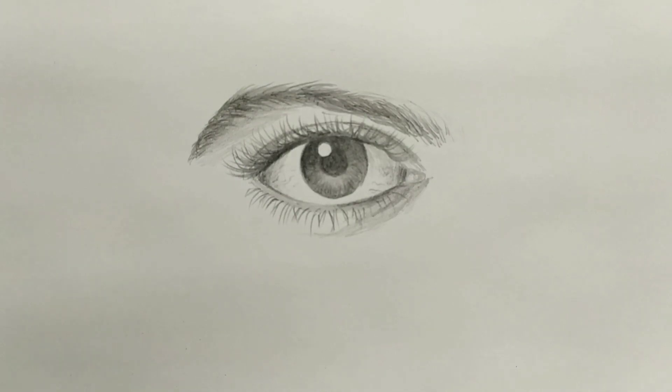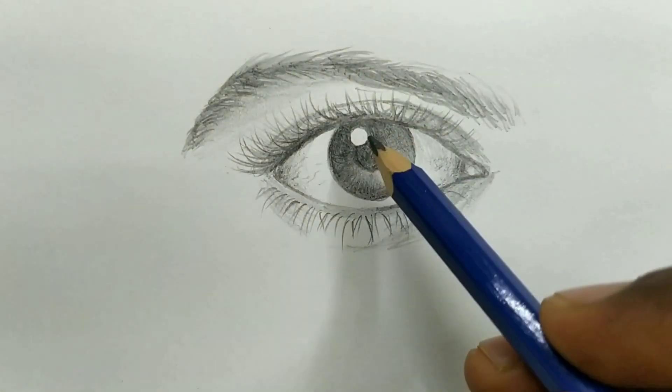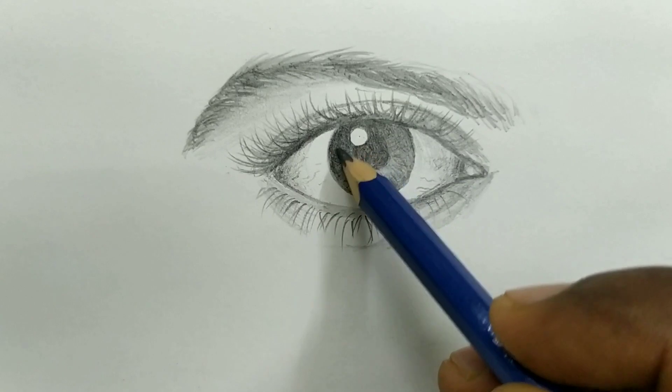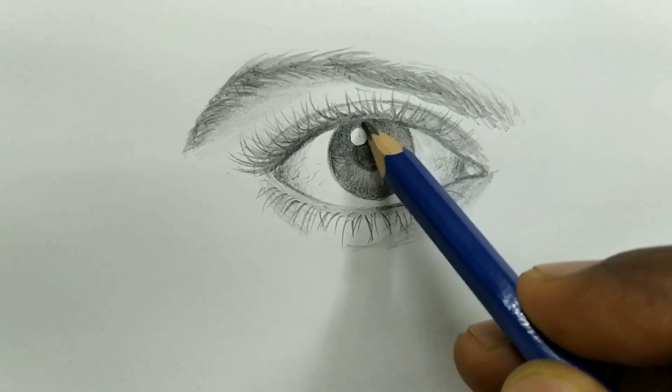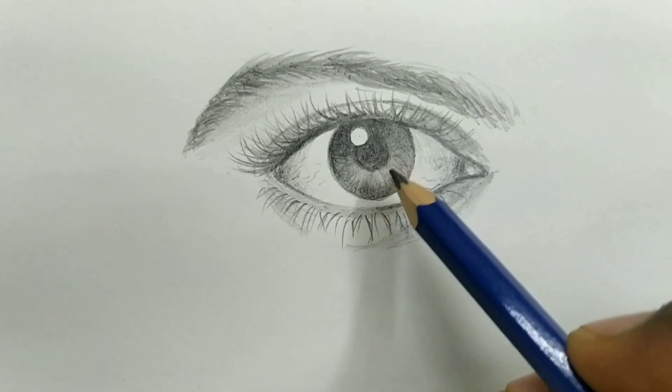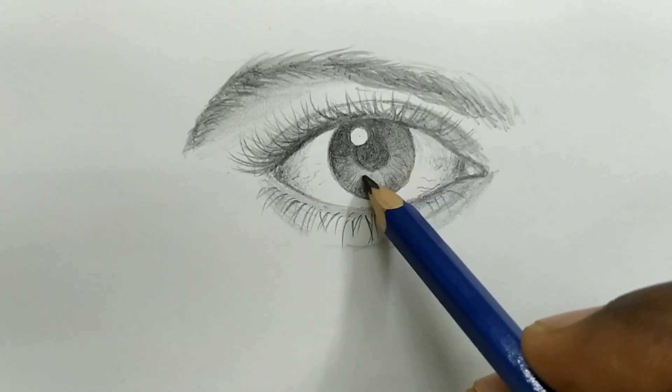We are almost finished. See this is the highlight. It is a darker area around the highlight and this is the darkest area. The opposite side is lighter.